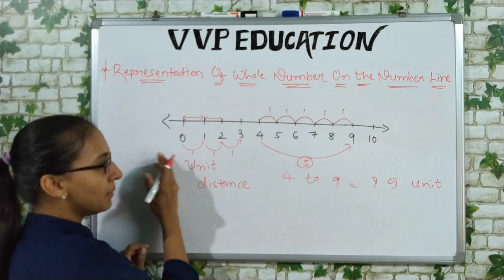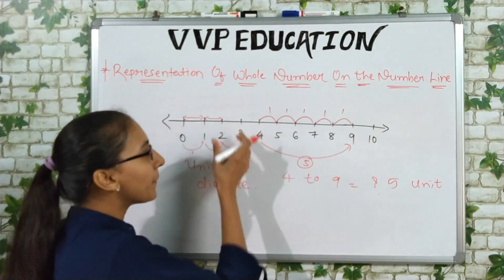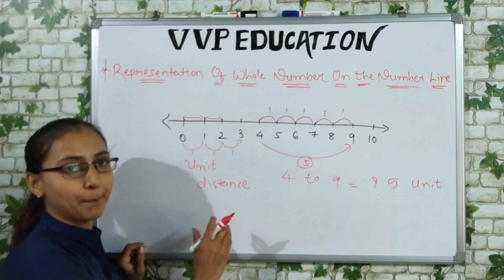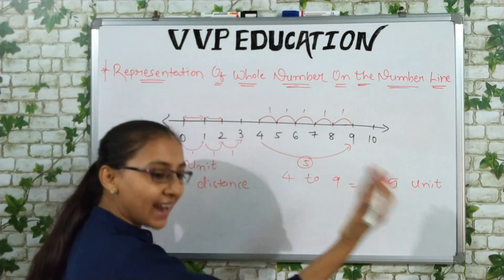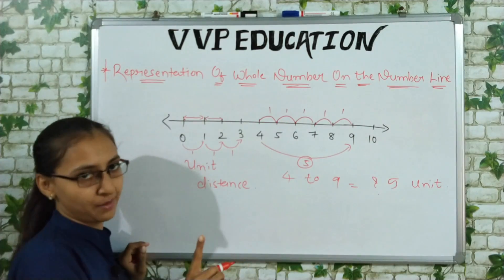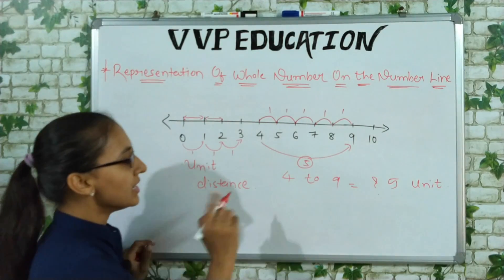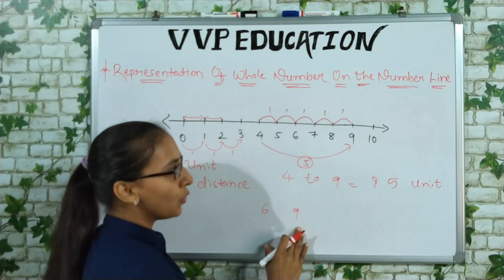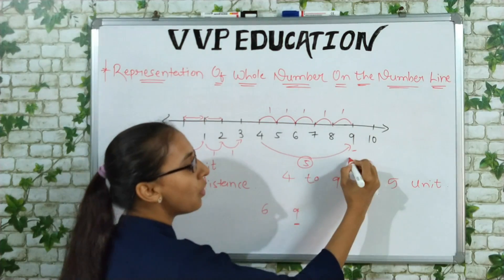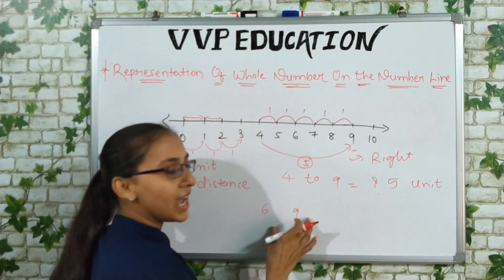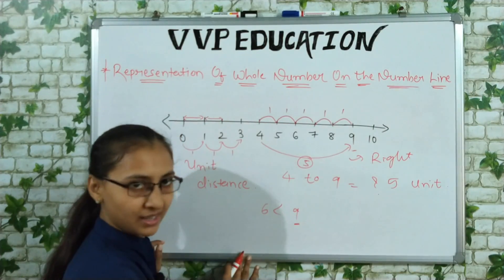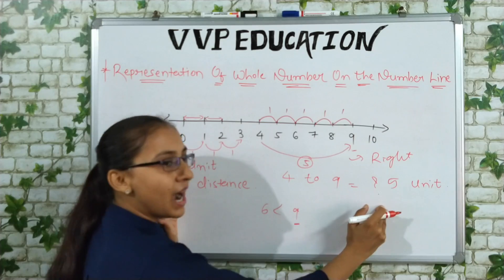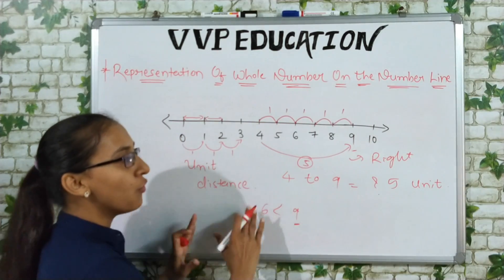When you move left to right on the number line, the numbers increase by 1 unit. Whenever you move to the right on the number line, you get a bigger number. For example, between 6 and 9 — since 9 is on the right side, 9 is greater than 6. So moving right means the number is greater.